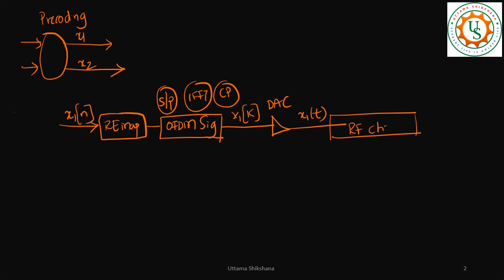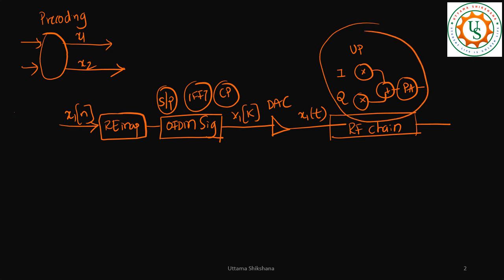In the RF chain we have the I channel and Q channel separately. We have an up-converter — basically local oscillators and up-conversion logic — and then a power amplifier. All these things are present in the RF chain. The output of this I call s1(t), which is then given to the antenna. When s1(t) comes out of the antenna, a certain kind of RF beam pattern is formed. For a single antenna, the beam pattern would look like a wider beam.